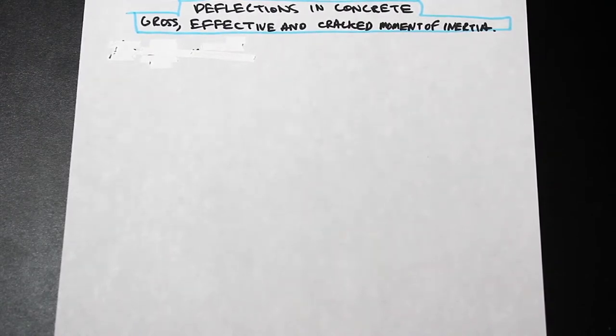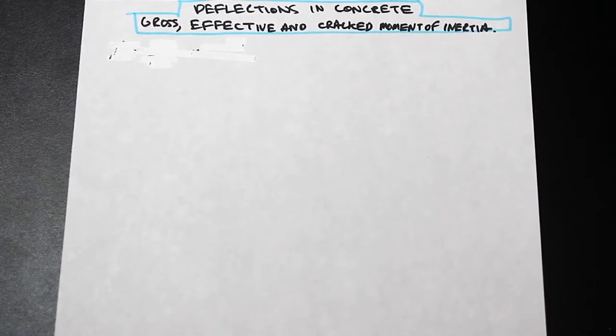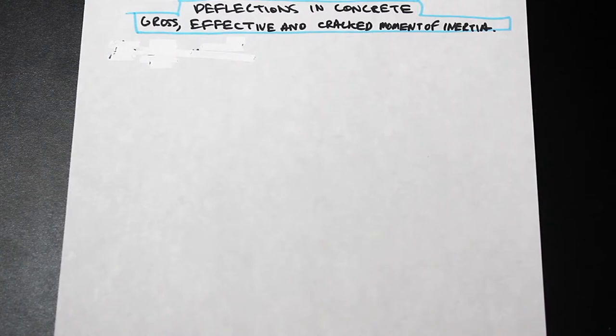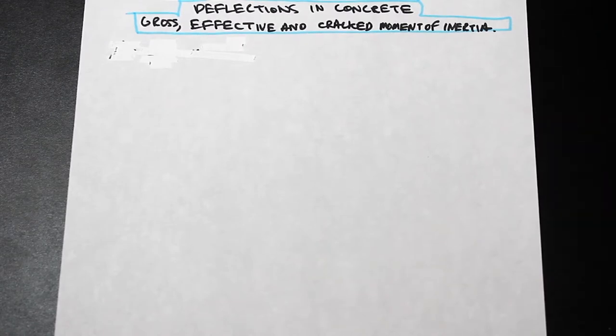Typically when we were doing really basic calculations we just assumed that the section was non-cracked — that it's just a perfectly rectangular section. But in reality, concrete does crack under tension, and when it cracks it loses its flexural stiffness. We need to take that into account when doing deflection calculations according to the Canadian code.